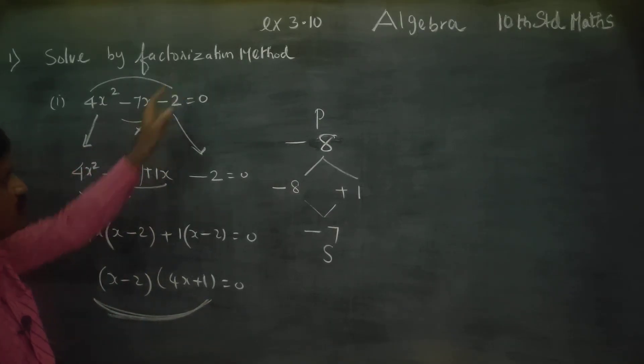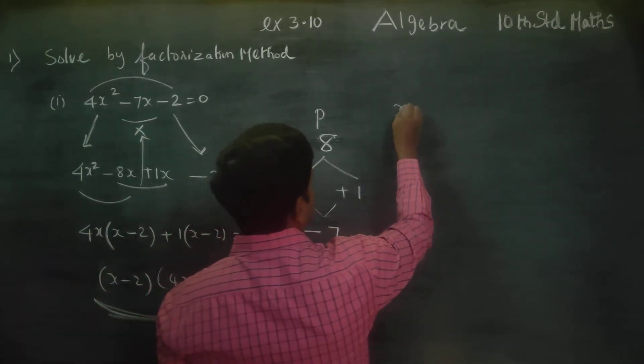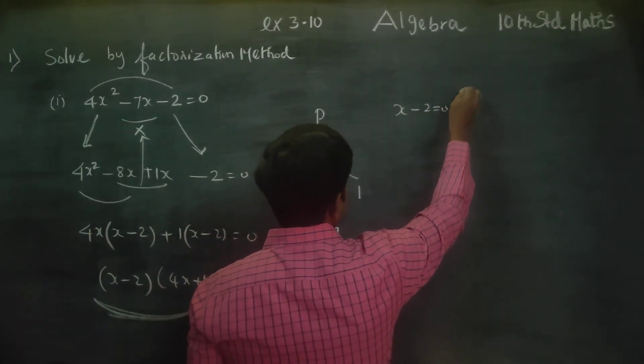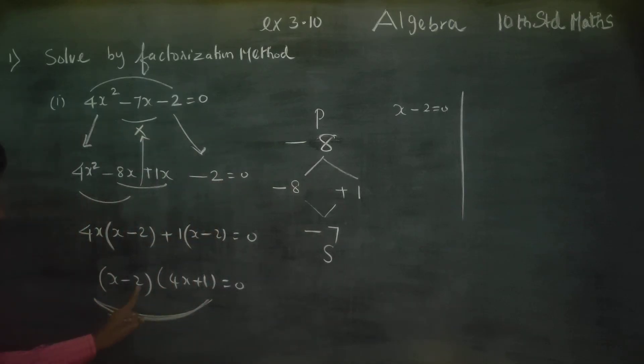Factorization factors are two brackets. Factorization sum can be written as x minus 2 equals 0. Two brackets multiplied equal to 0. Either this is 0 or this is 0.